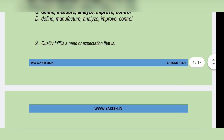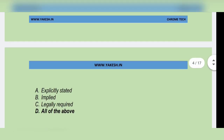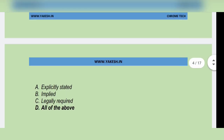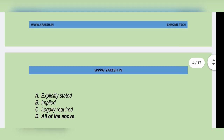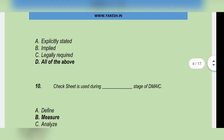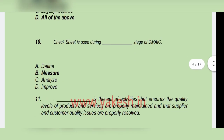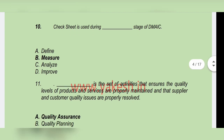Quality fulfills a need or expectation — Option D: All of the above is the correct answer. Next question: Check sheet is used during the — Option B: Measure stage of DMAIC.